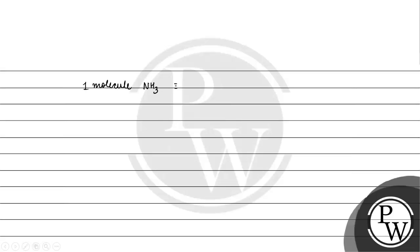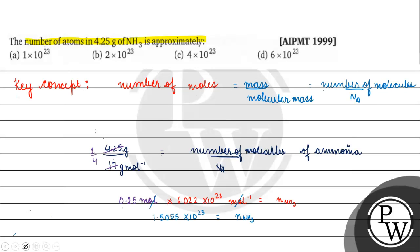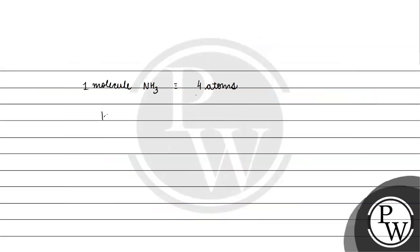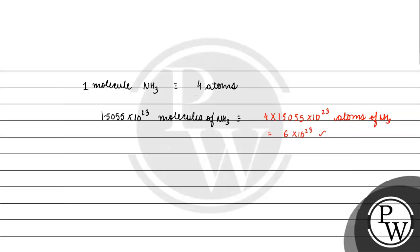In ammonia, we have 1 nitrogen atom and 3 hydrogen atoms, so 4 atoms are present per molecule. We have 1.5055 × 10^23 molecules of ammonia, so the total number of atoms is 4 × 1.5055 × 10^23, which gives us approximately 6 × 10^23 atoms of ammonia.